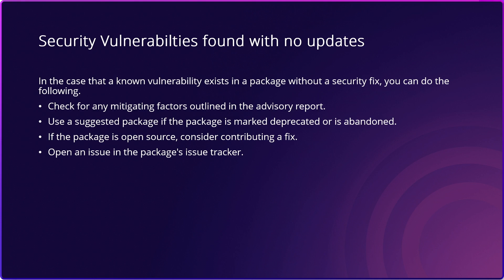Next, you could use a suggested package as a replacement. In the case that a security advisory is reported for the package you're using and the package is marked as deprecated or seems abandoned, consider using any suggested alternate package that the package author has declared, or a package comprising similar functionality that is maintained. Additionally, you could also contribute a fix. If a fix does not exist in the security advisory, you may want to suggest changes that address the vulnerability via a pull request on the package's open repository, or contact the author through the contact owners section on the nuget.org package detail page.